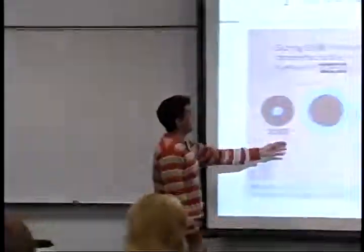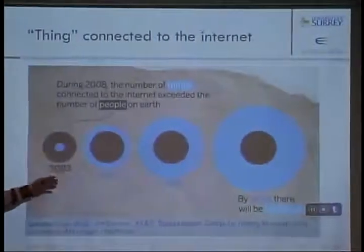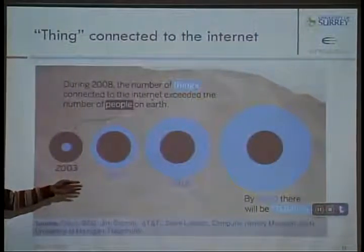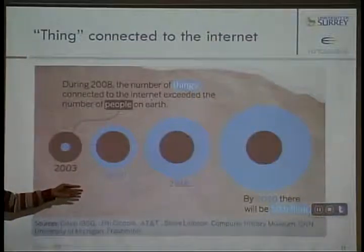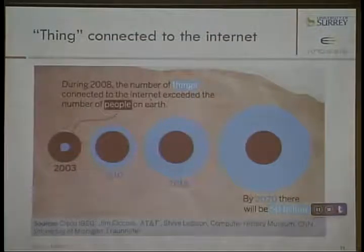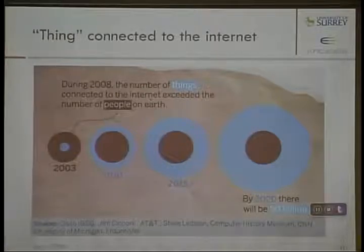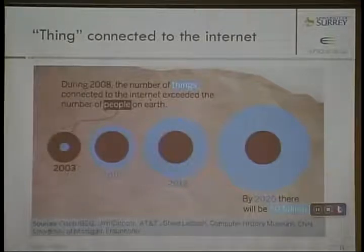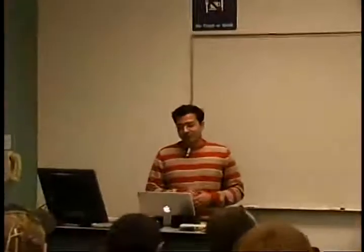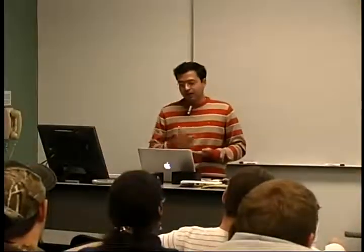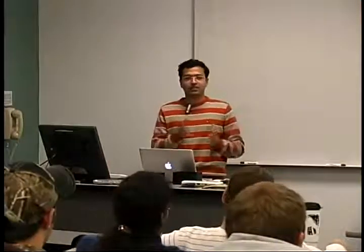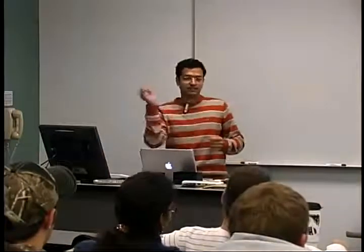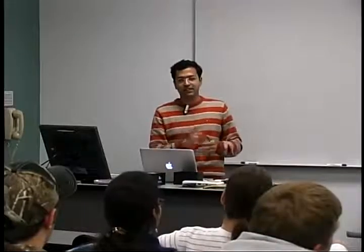We've seen a continuous increase in the number of things connected to the world. In 2008, it was found that the number of physical things exceeded the number of people on earth. The trend will continue with reduced costs for processing devices. It's probably not going to cost $100 much longer — in a few years it might cost $50. Prices are going to go low, and finally you have this 'smart dust' vision where there are a bunch of sensors everywhere in the environment monitoring physical activity.